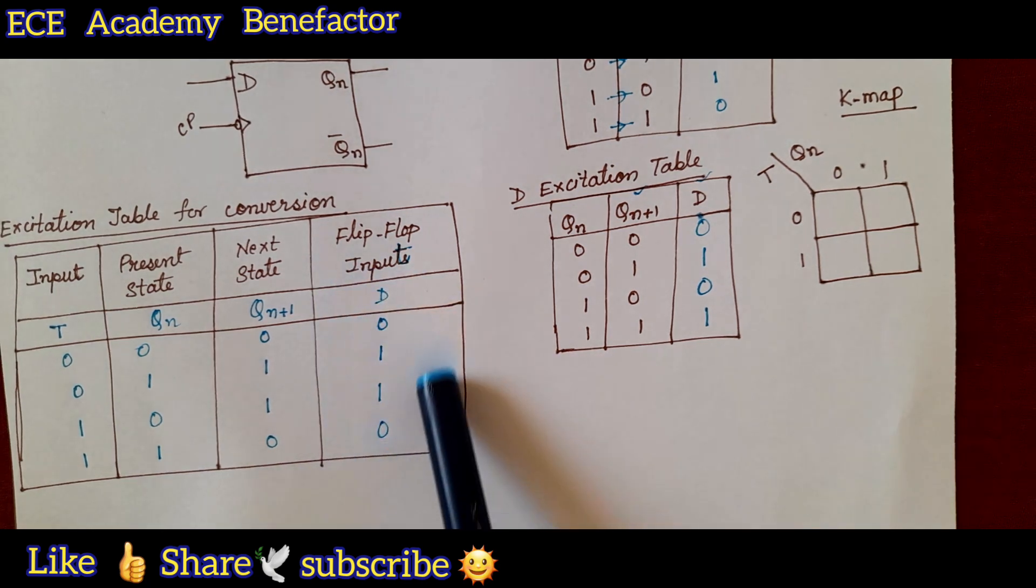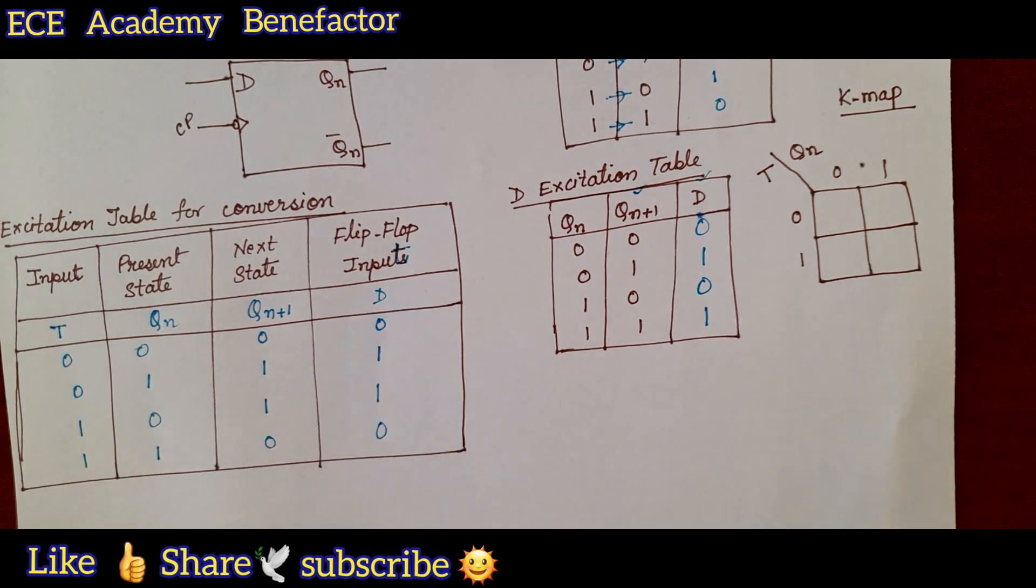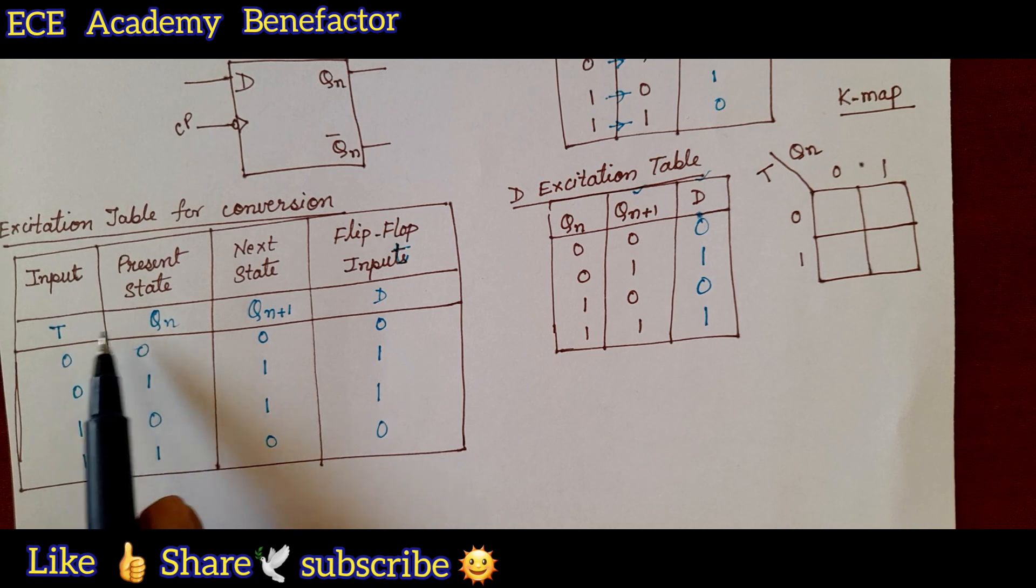Now we need to simplify the K map for the D flip-flop. We have to fill this bits in the two variable K map which is drawn between T and Q n for solving for D.